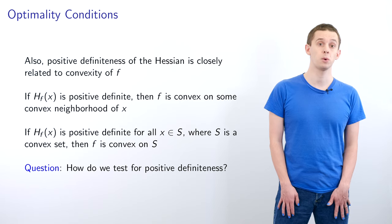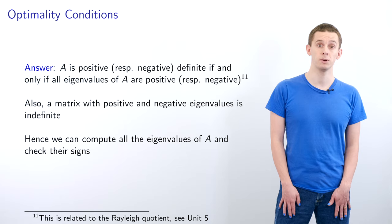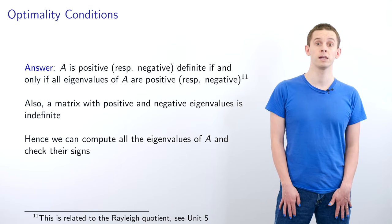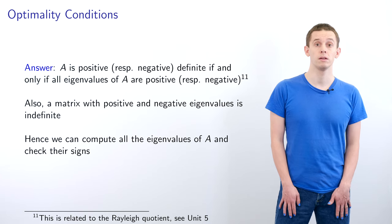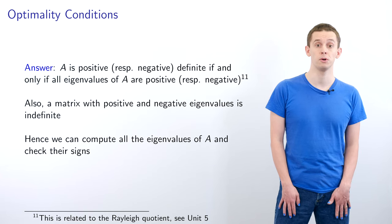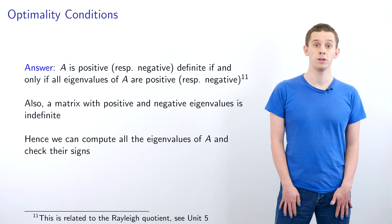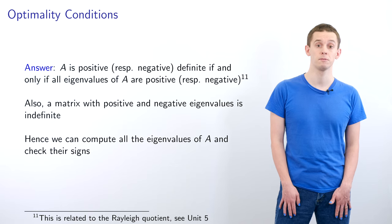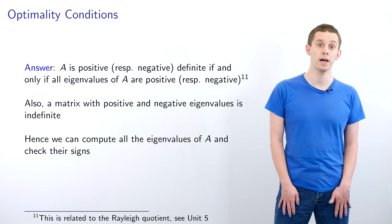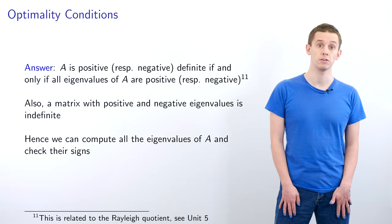How do we test for positive definiteness? A matrix A is positive definite if and only if all of its eigenvalues are positive. Similarly, A is negative definite if and only if all eigenvalues are negative. A matrix with both positive and negative eigenvalues is indefinite. Hence, we can compute the eigenvalues of A and check their signs.